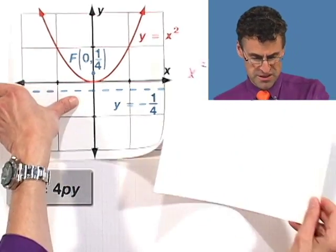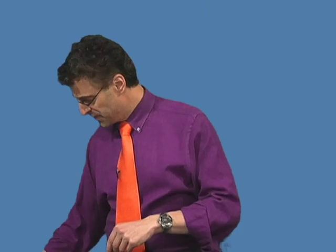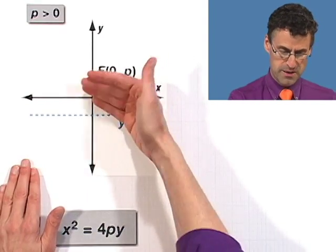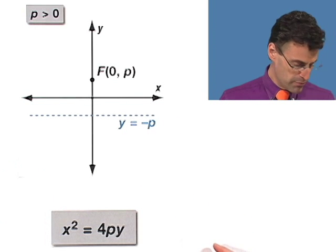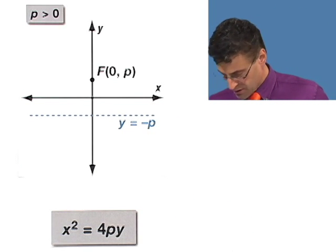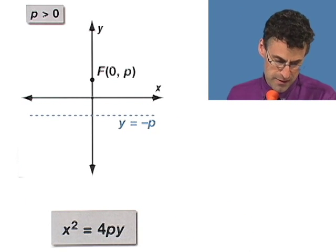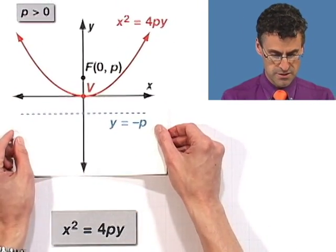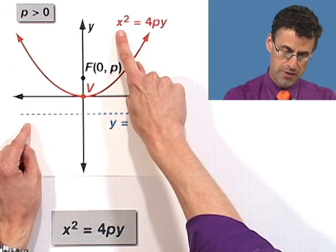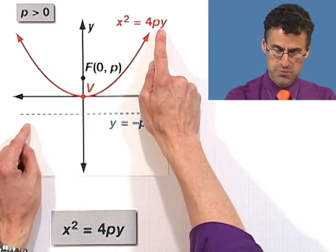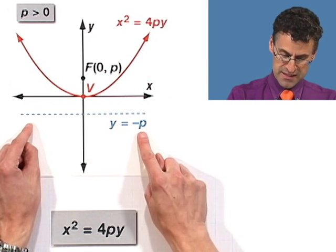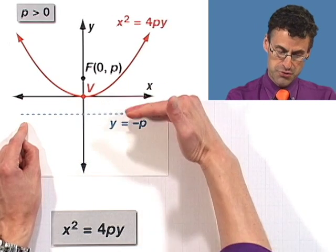So for example, if the p were positive, which is what I just showed you here, the focus is up here at 0,p and the directrix would be kind of the opposite in a line. Then we'd get a parabola that zooms in and smiles right around here. And if I write it as x squared equals 4p times y, that p will reveal that p there, and its negative will reveal the drop down of the line.